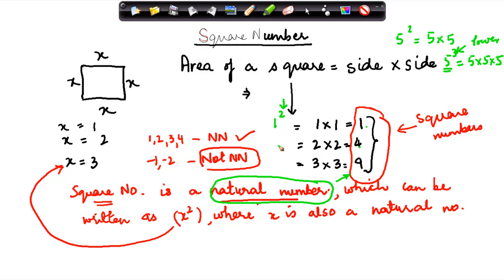So 4 can also be written as 2 square, 9 can be written as 3 square. Now square number is a natural number, so all these 3 numbers are natural numbers. These numbers can also be written as 1 square, 2 square, 3 square, where x's value is 1, 2, and 3, which is also a natural number.